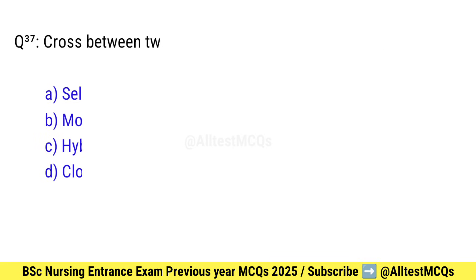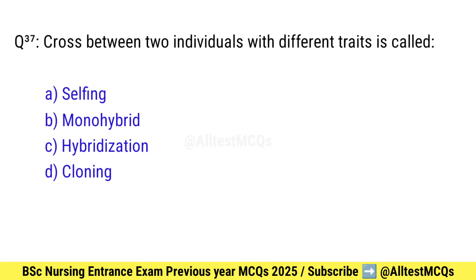Question number 37. A cross between two individuals with different traits is called what? Right option is C: Hybridization.